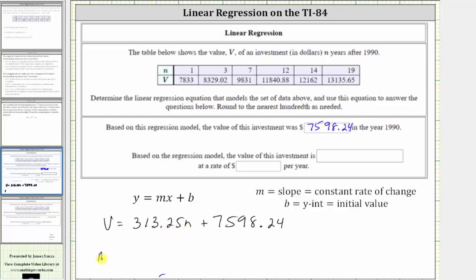So the slope m, which represents the constant rate of change, or in our case, the change of v divided by the change in n, is equal to 313.25. Let's write that as a fraction with the denominator of one. So we have 313.25 over one, where the units for v are in dollars and n is in years.